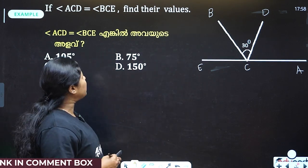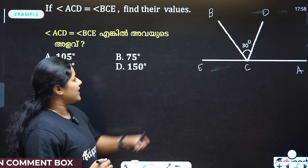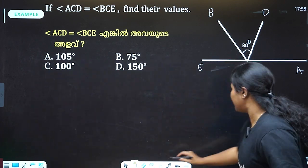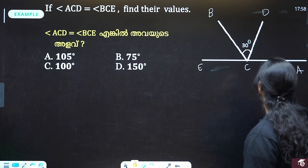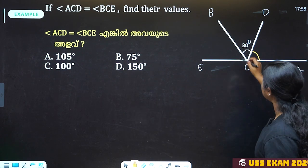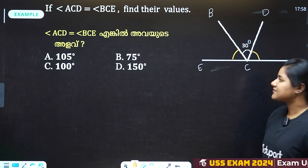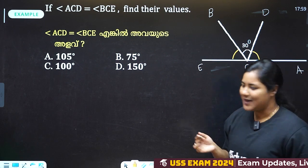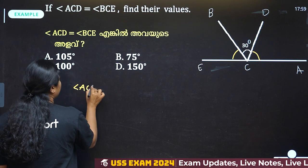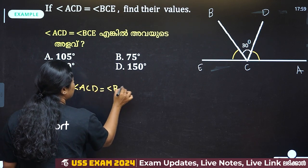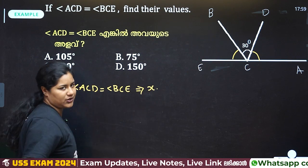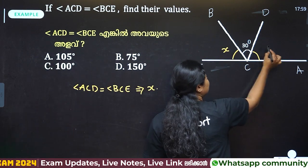If angle ACD is equal to angle BCE, you should say angle ACD is BCE. Angle ACD is BCE. A-C-D is this one angle. B-C-E is this one angle. Suppose angle ACD equals angle BCE — I'm going to work with the angle. Then, if you call this one x and this one x, at that point I can tell you the value.